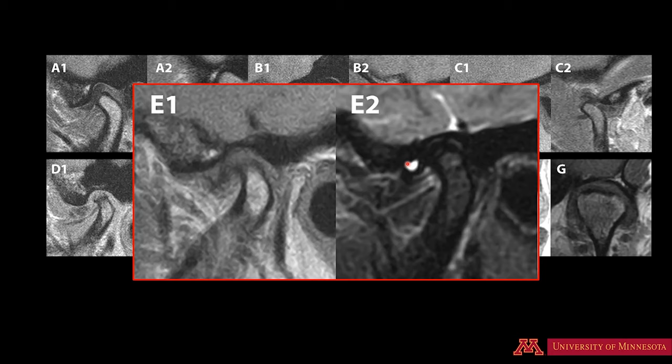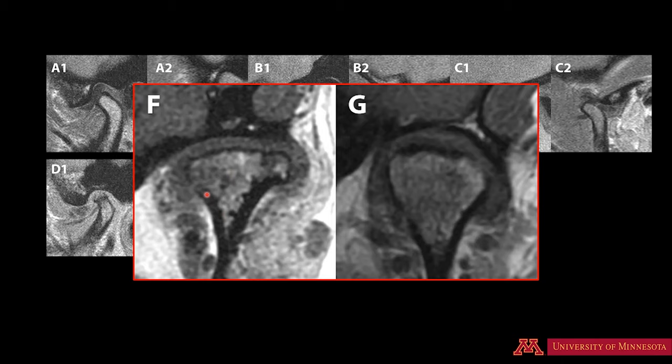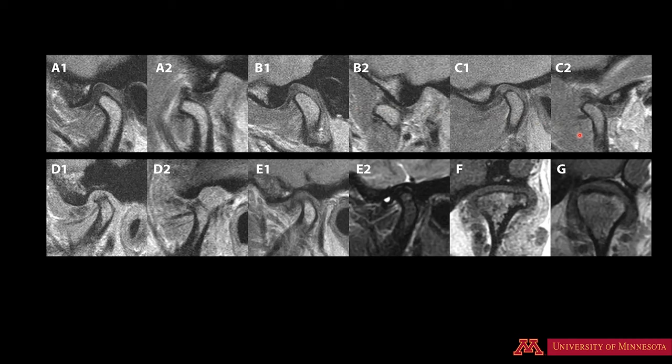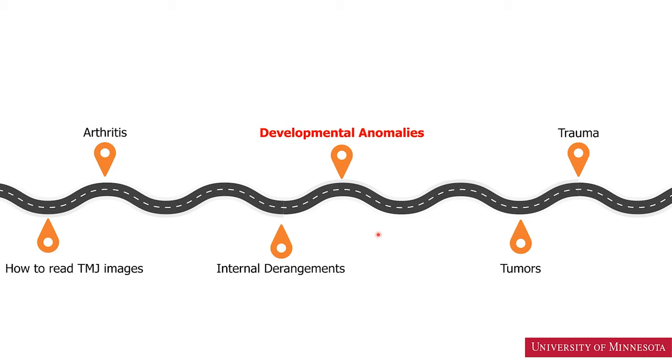All the images we have seen are sagittal slices. The following two images are coronal slices. This is the coronal view of the condylar head, articular fossa, and this charcoal gray structure is the intra-articular disc. This is the normal relationship of the condyle, fossa, and disc. On the next view, we can see that the disc is laterally displaced. These images are proton density except one, which is a T2 image used to evaluate fluid.